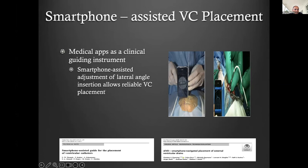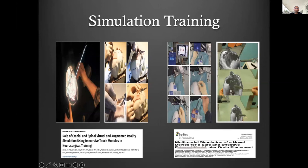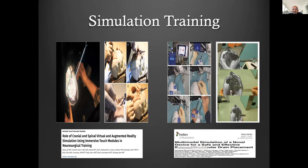The smartphone-assisted adjustment of the lateral angle apparently allows reliable ventricular catheter placement, with most of the correction needing to be done in the coronal plane. Simulation training has been a big driver at our center. Whether virtual or augmented reality type placement, or physical models built for simulation training, if your simulation training system is based on good technology and science, it can't go wrong as a fundamental part of your trainee regimen.